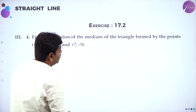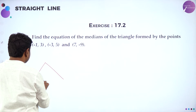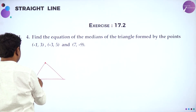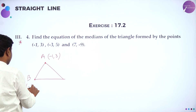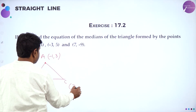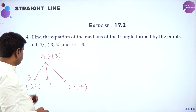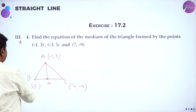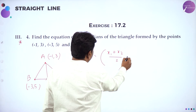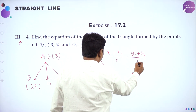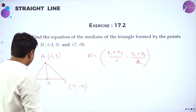Next, find the equation of the medians of the triangle formed by the points. This is important. A median is the line joining one vertex to the midpoint of the opposite side. Let A be (-1, 3), B be (-3, 5), and C be (7, -9). Median AM: M is the midpoint of BC. Use the midpoint formula: X1 plus X2 by 2 and Y1 plus Y2 by 2.